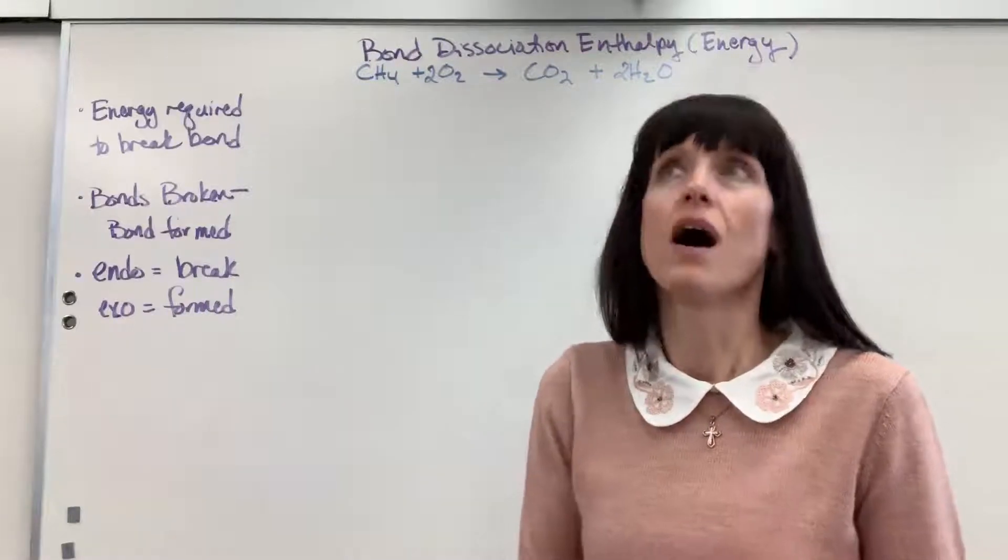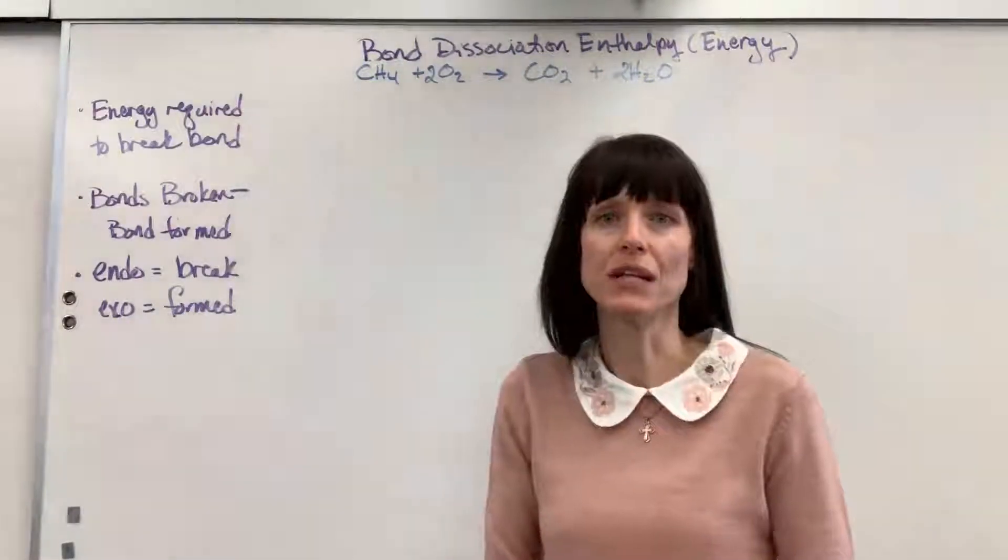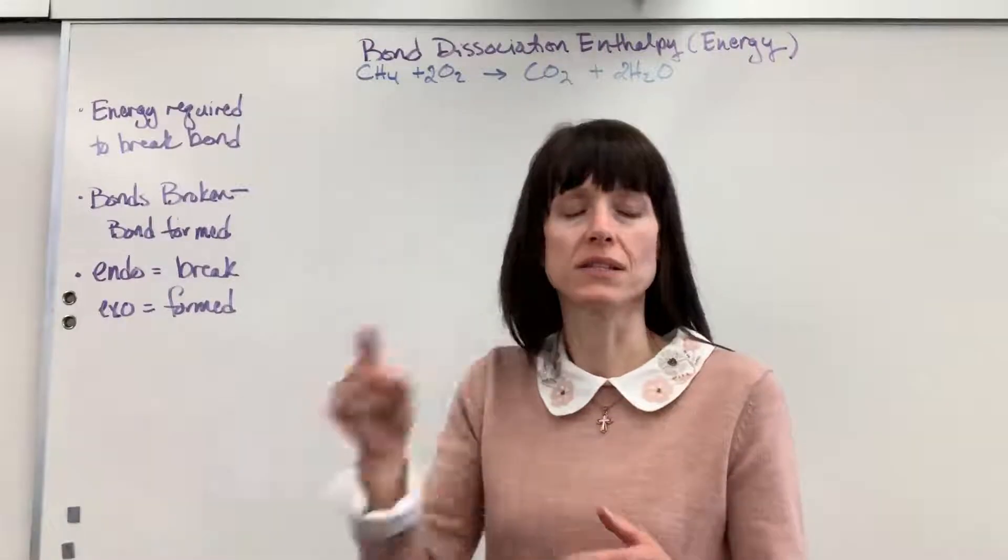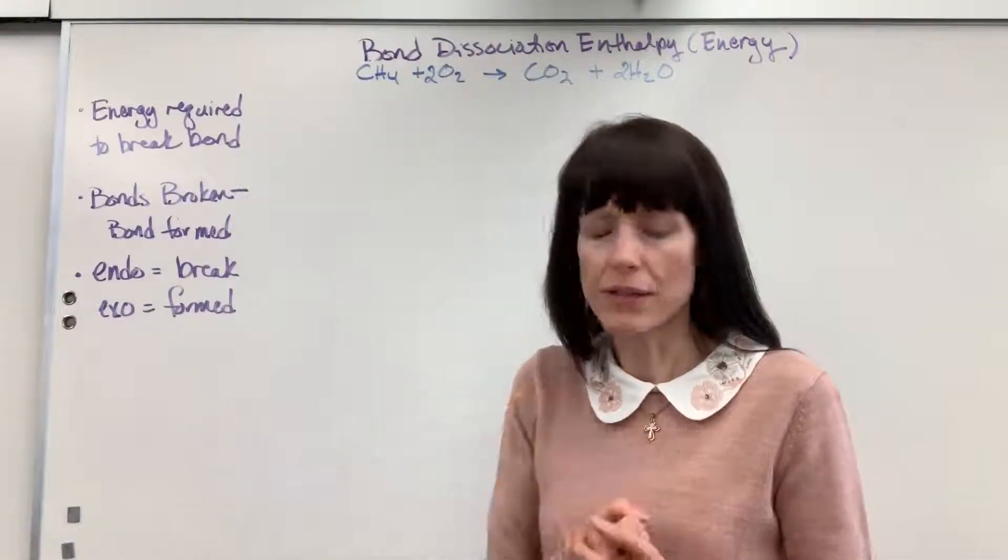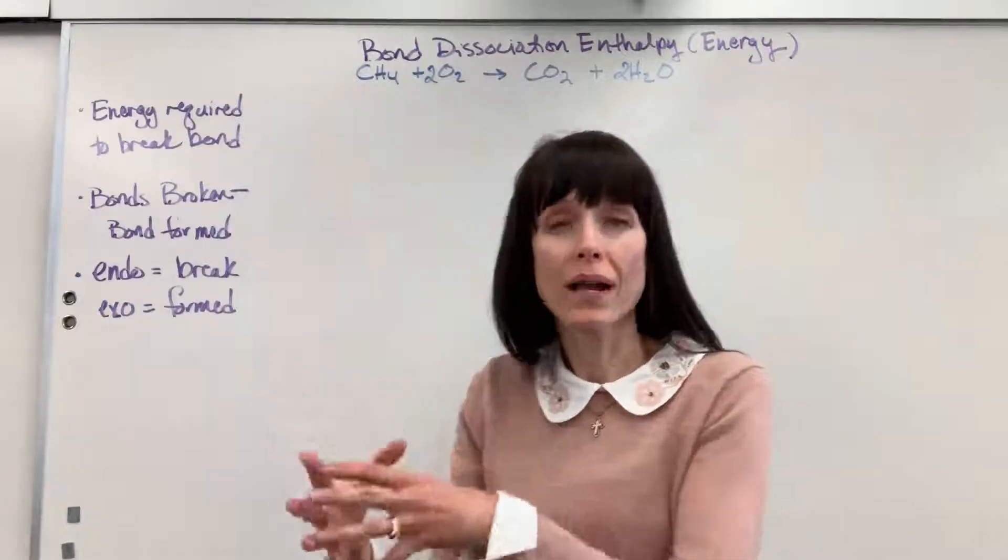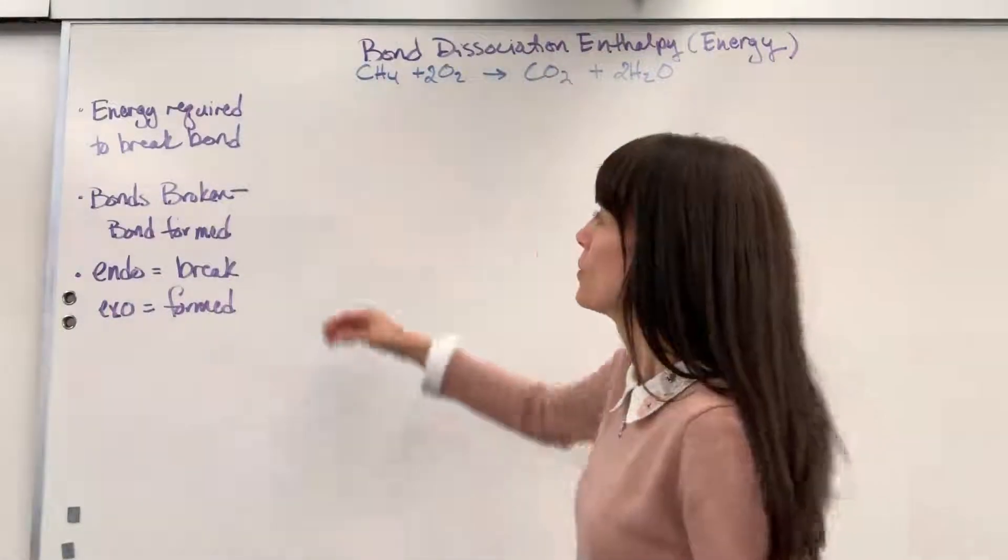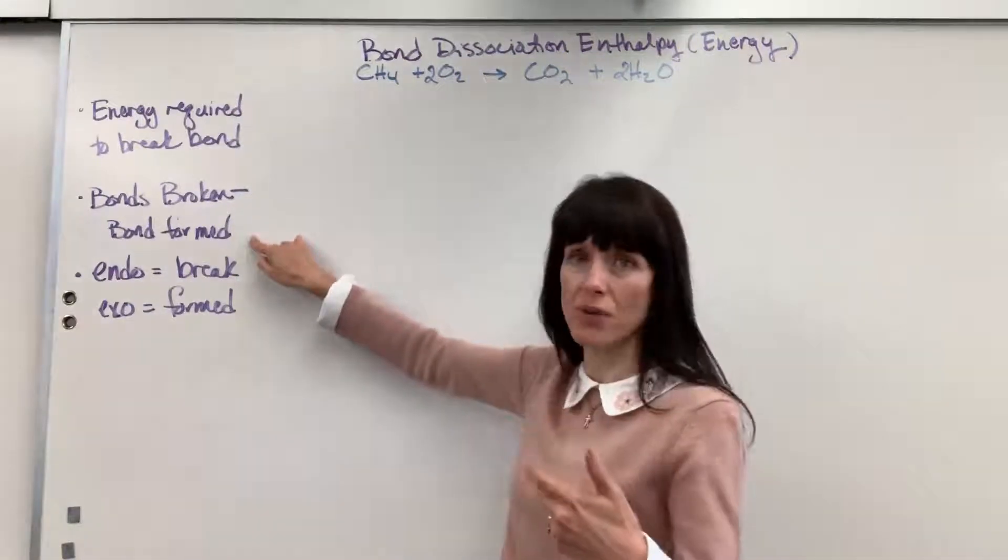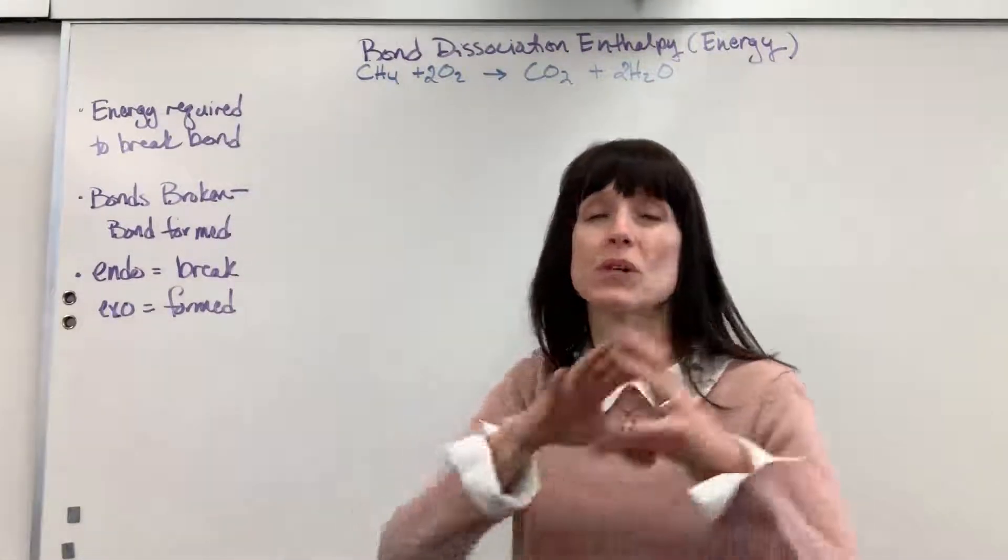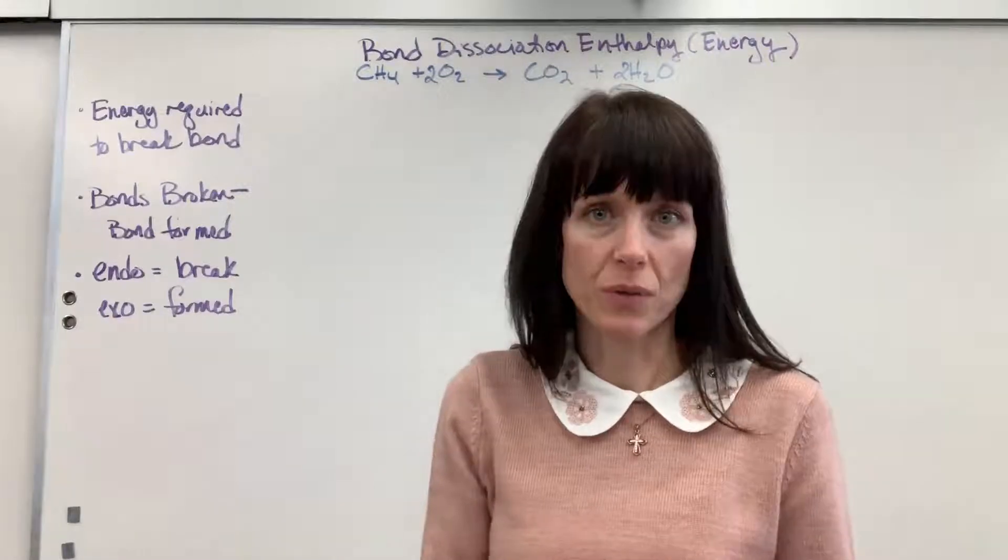Now notice we don't use the words product and reactant. Here's the reason why. Almost everything we do in chemistry is final minus initial, like delta T, final temperature minus initial temperature. If we use standard enthalpy of formation, it is products minus reactants. Well, if you think bonds broken, that's reactants. Minus bonds formed, that's products. So we don't confuse ourselves. We use different words.